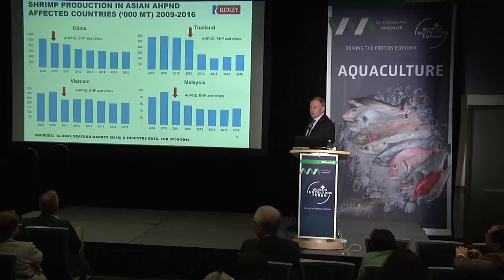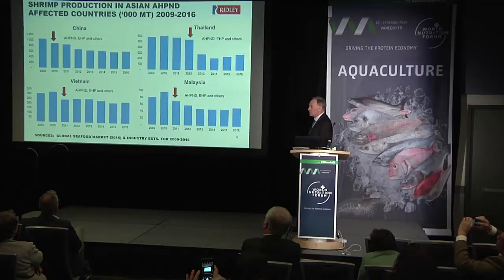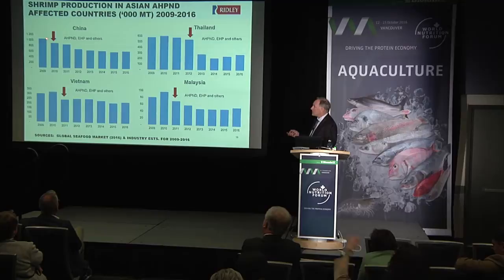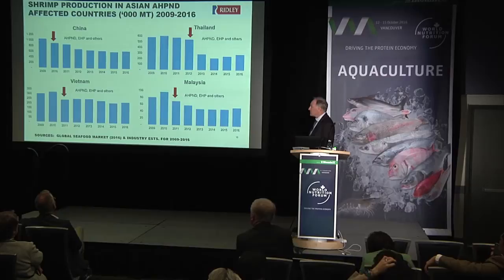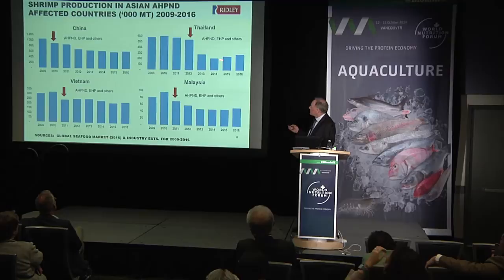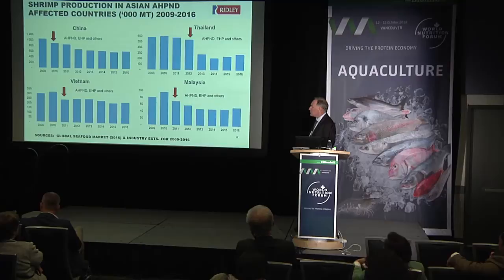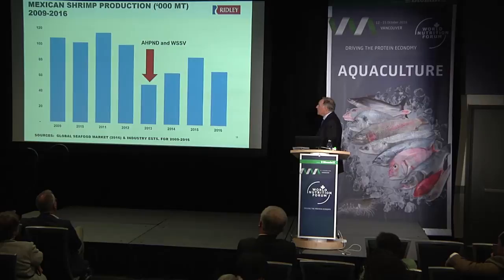Looking country by country: China's official statistics claim over a million to a million and a half metric tons per year — that's absolutely not true. A more likely estimate is that they've declined from just over a million down to about 600,000 tonnes, a direct result of AHPND, EHP, and other diseases. Thailand has gone from about 600,000 tonnes down to 200,000-300,000 tonnes and is not making a spectacular recovery. Vietnam is similarly down to about 200,000-250,000, and Malaysia has gone from 100,000 down to about 50,000 metric tons since AHPND arrived.